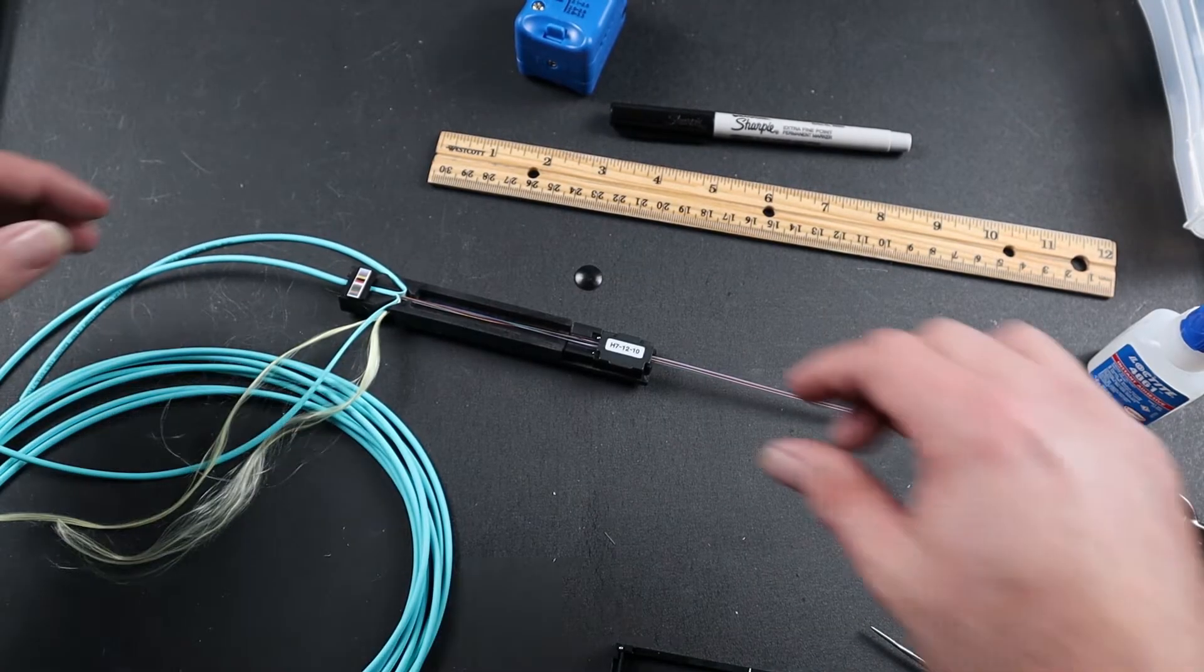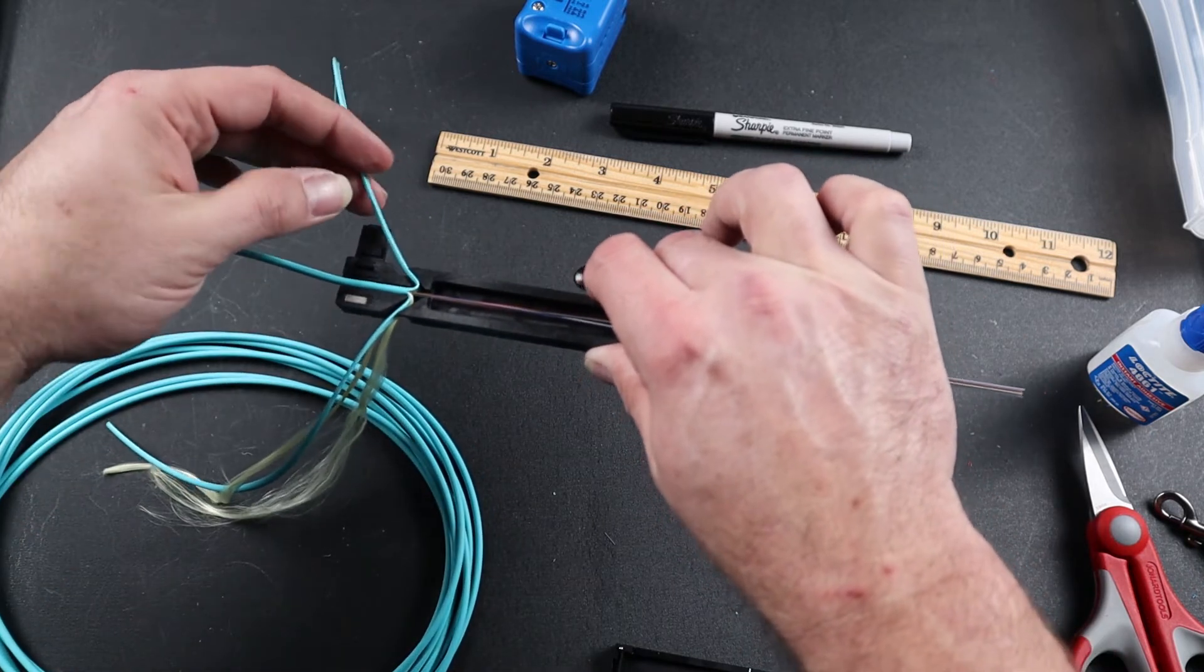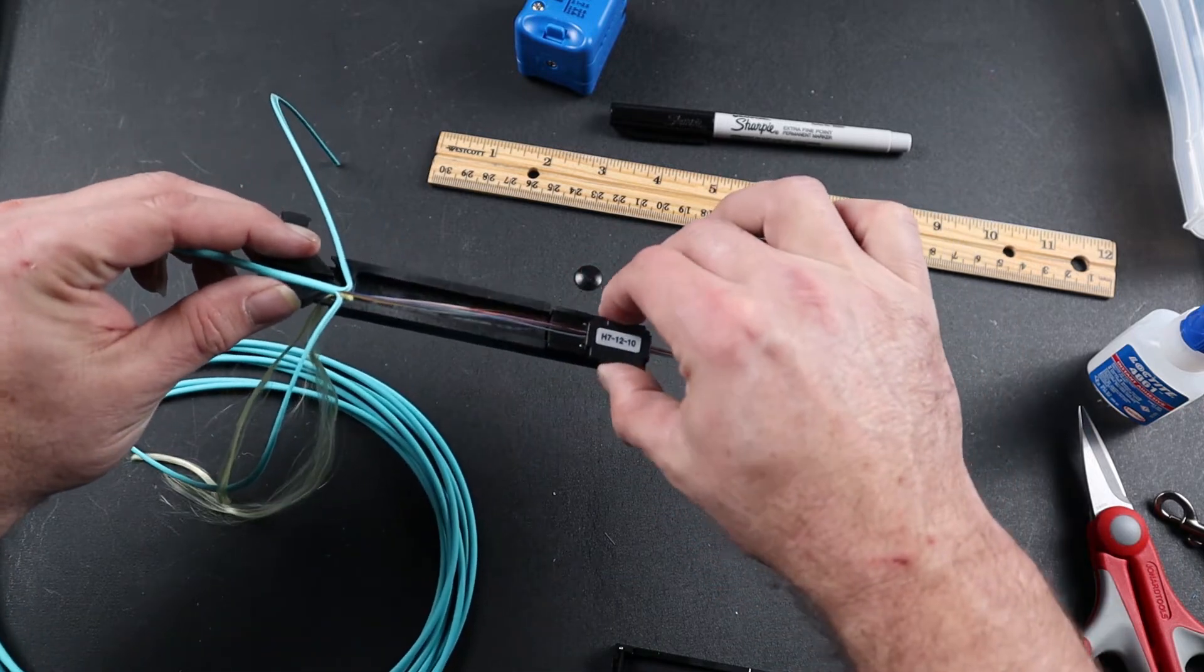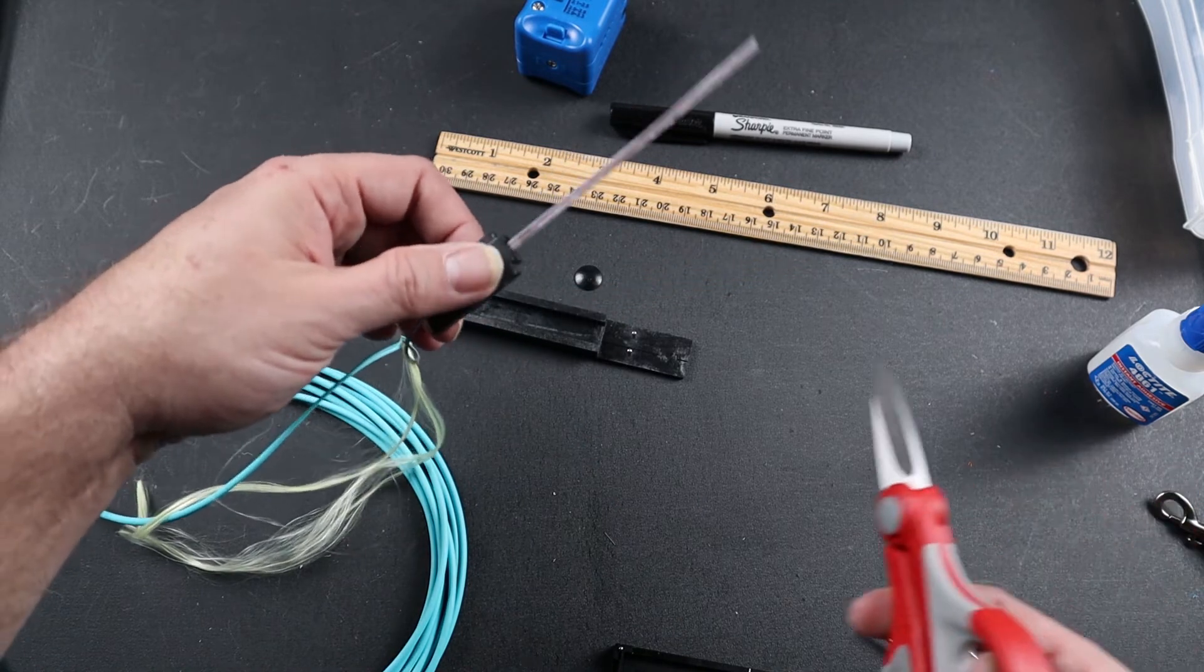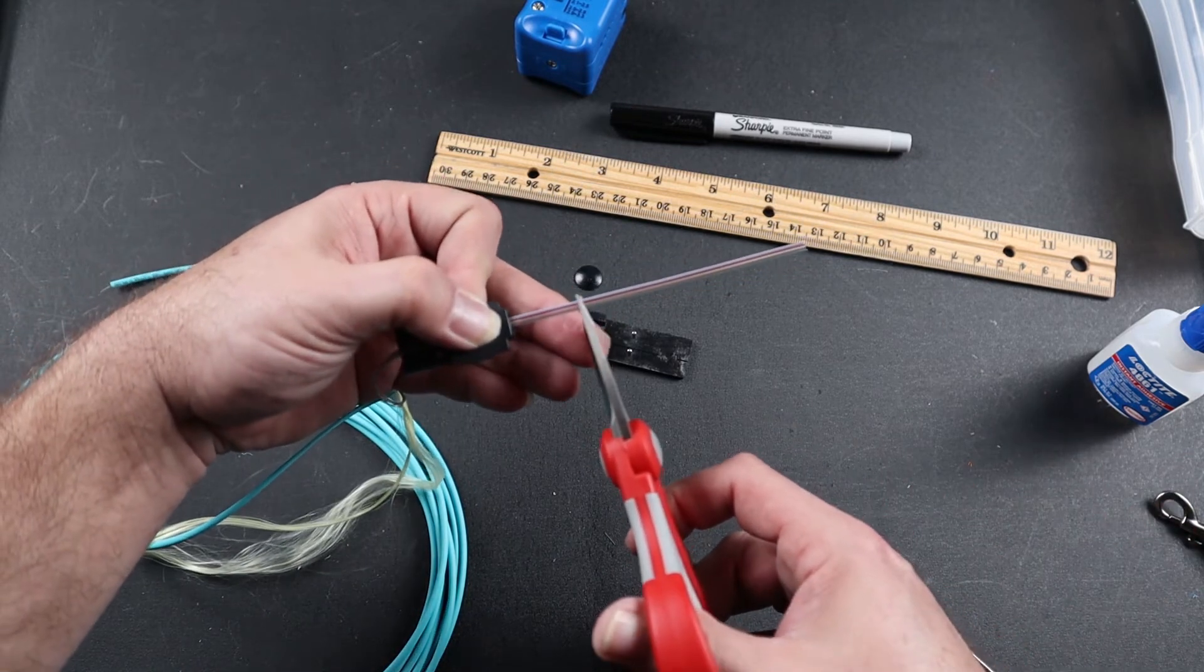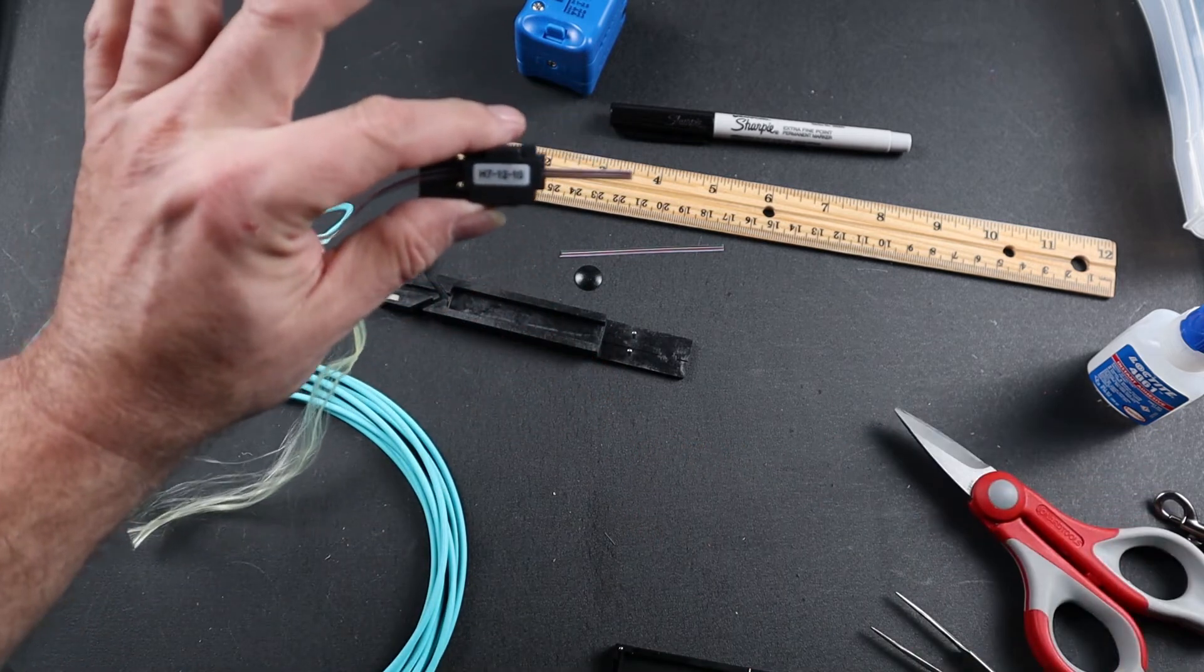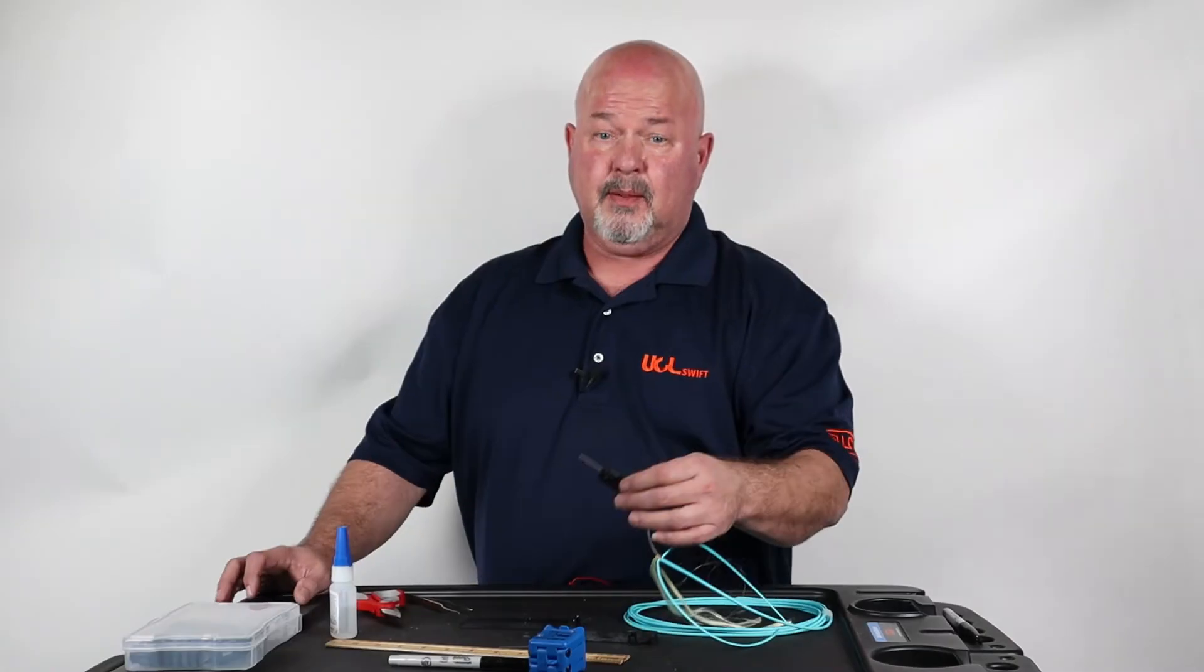Once your glue has dried, open the back door, remove your fiber and remove your fiber holder. Take your fiber snips, trim your cable, and now it's ready to terminate. This concludes this video. Thank you.